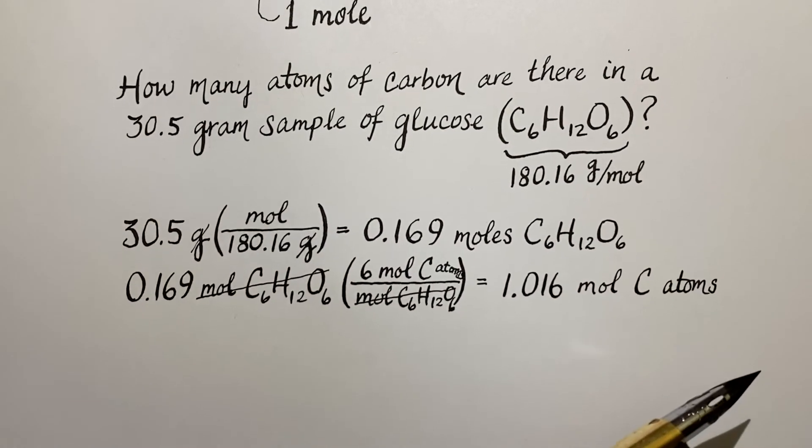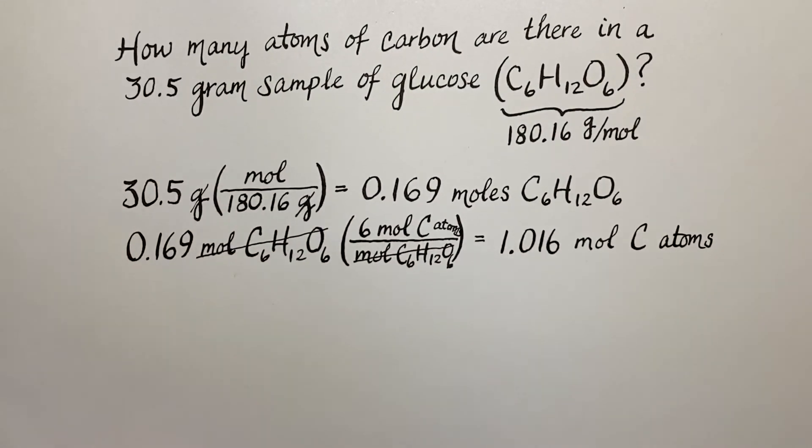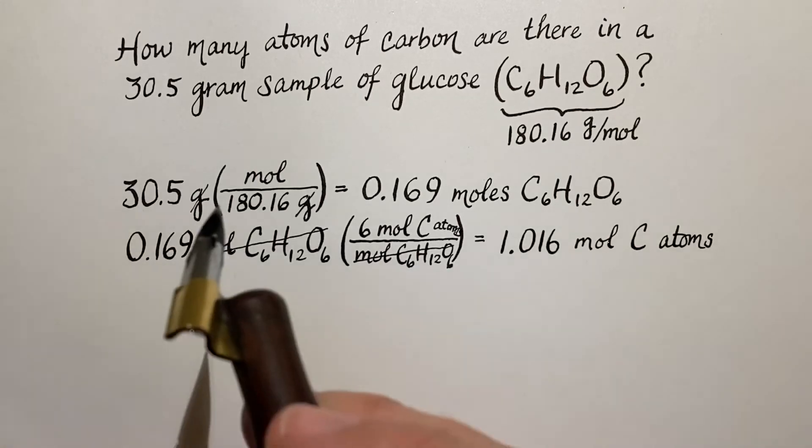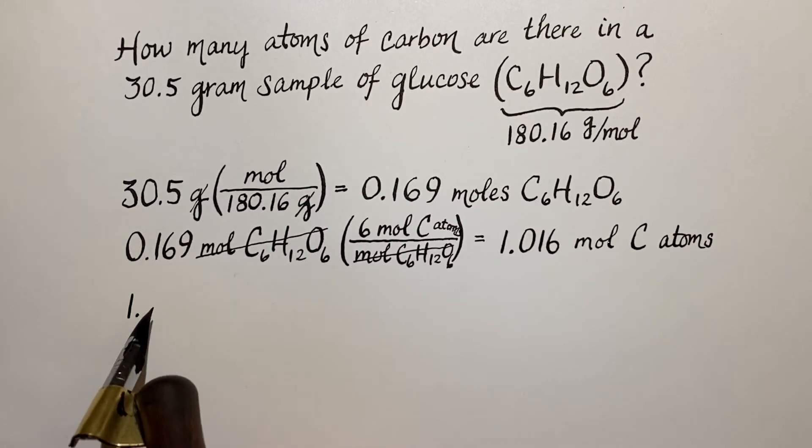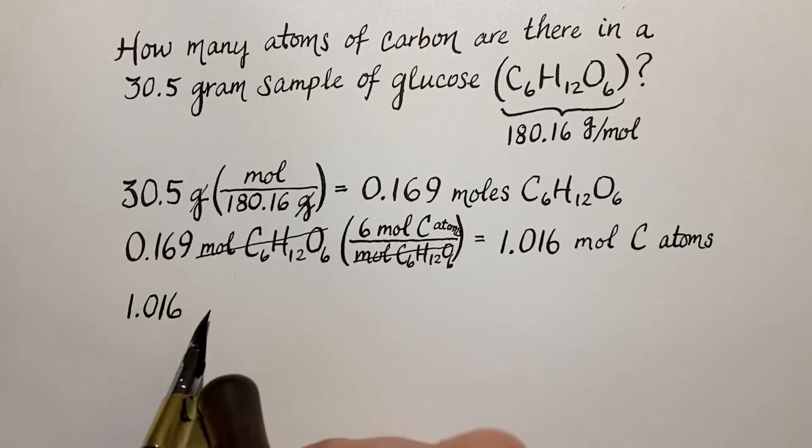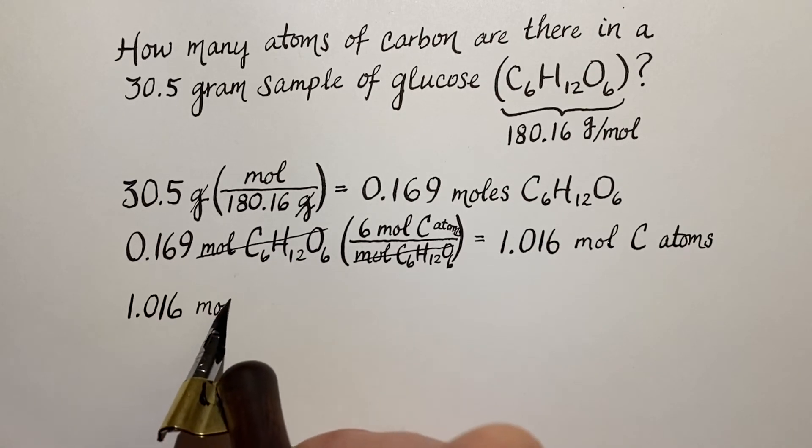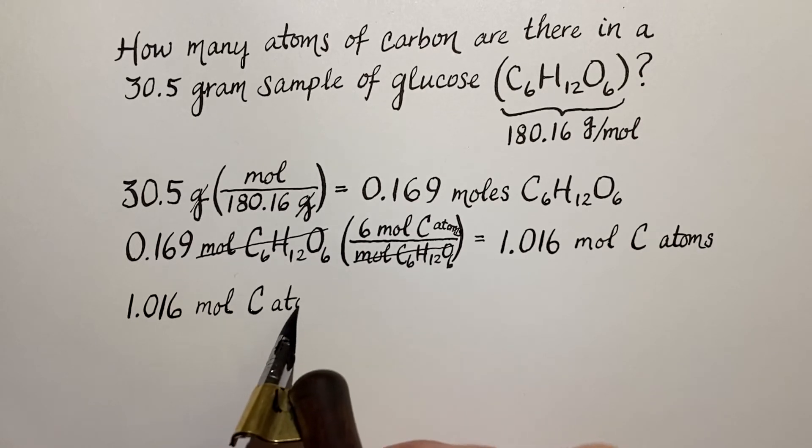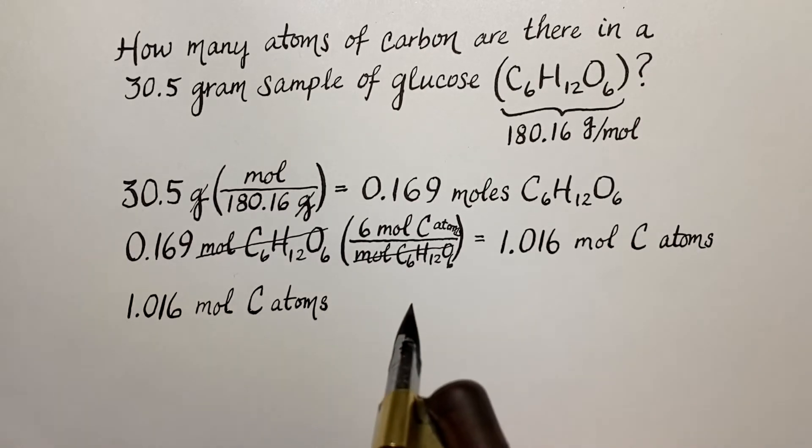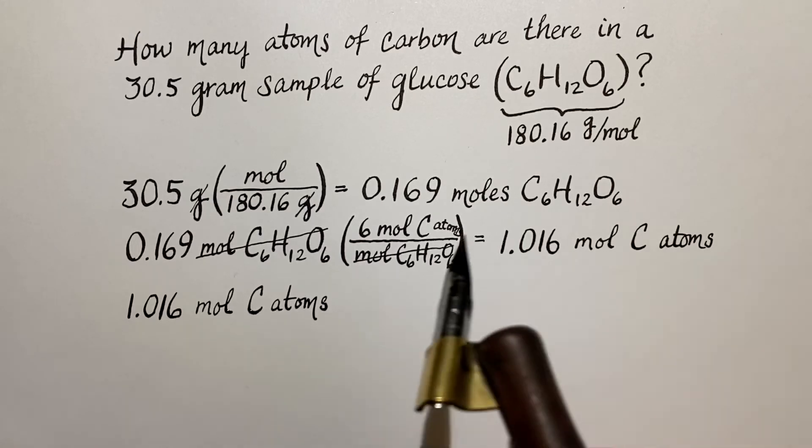Because we know that for every mole of carbon atoms there will be this many of those carbon atoms. So let's do this final calculation here. And set it up: 1.016 moles carbon atoms.